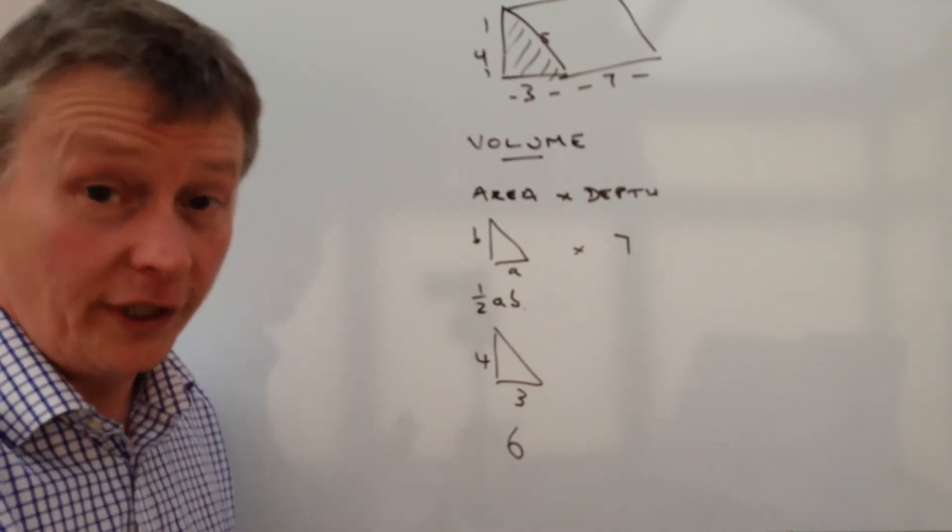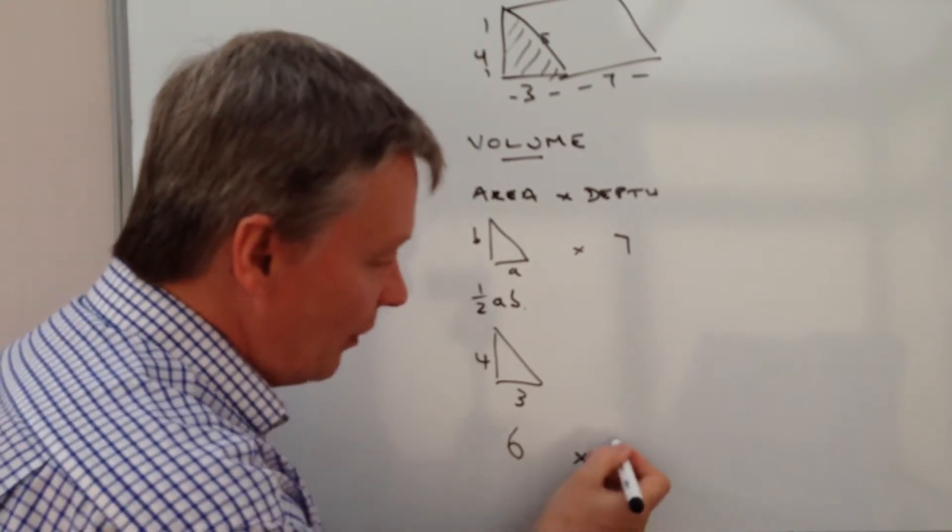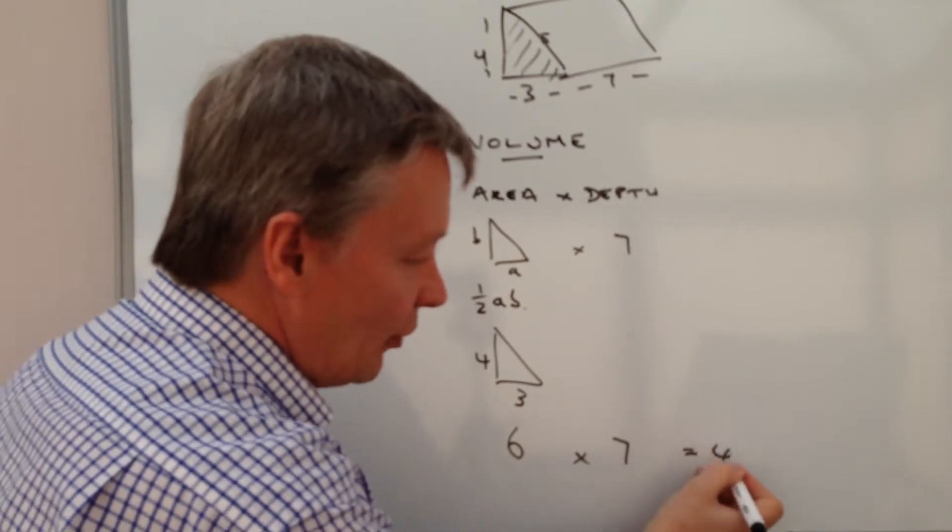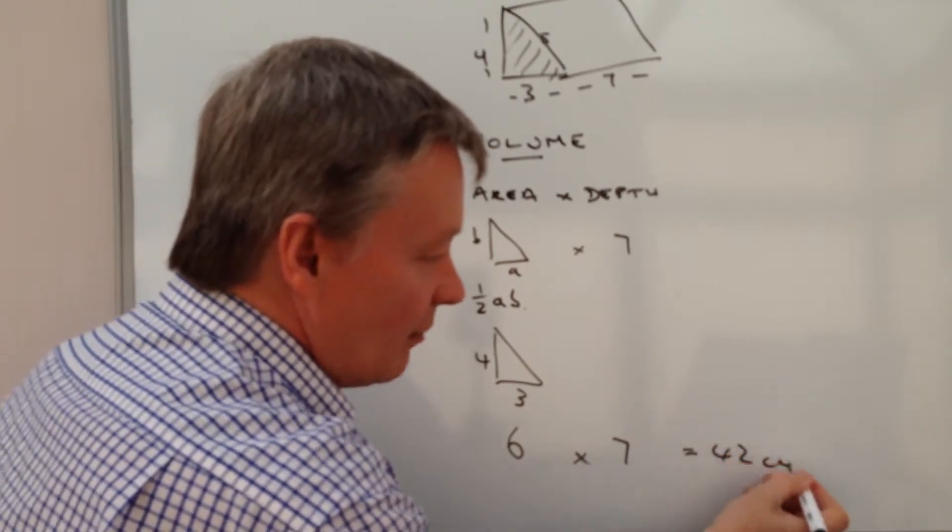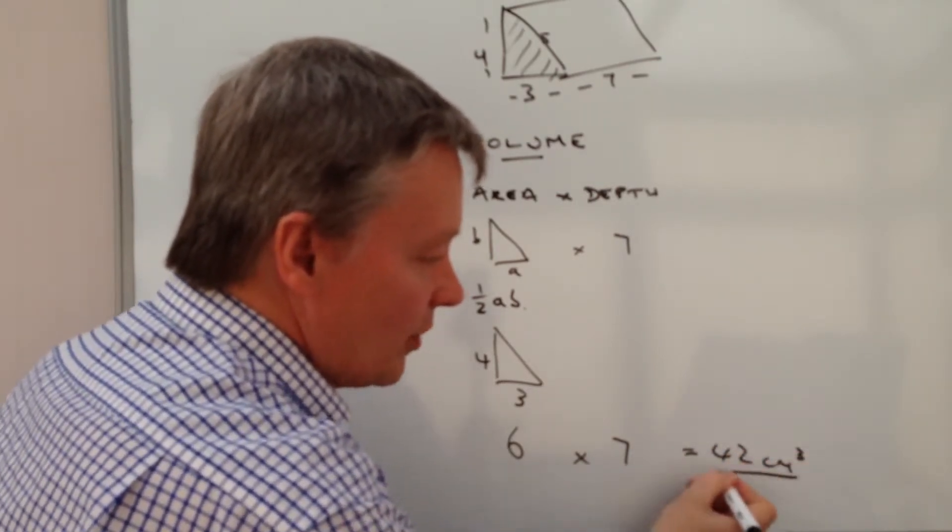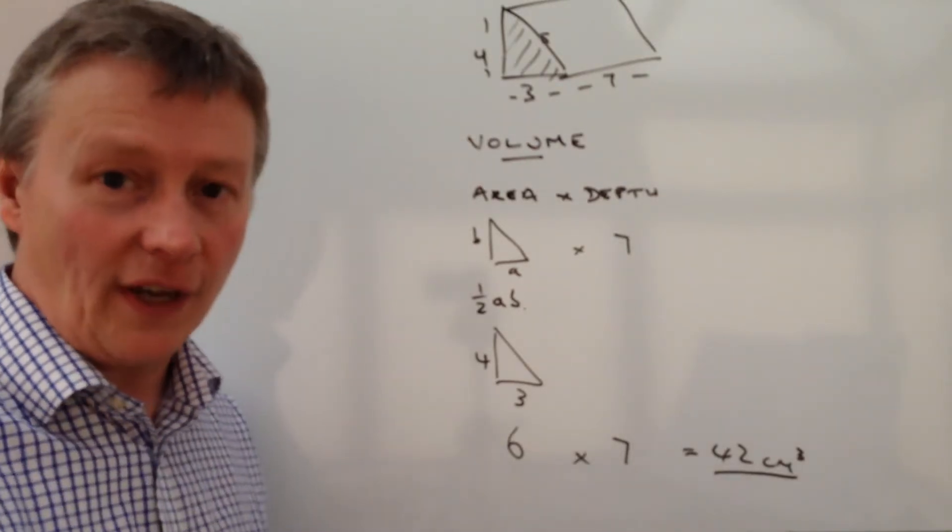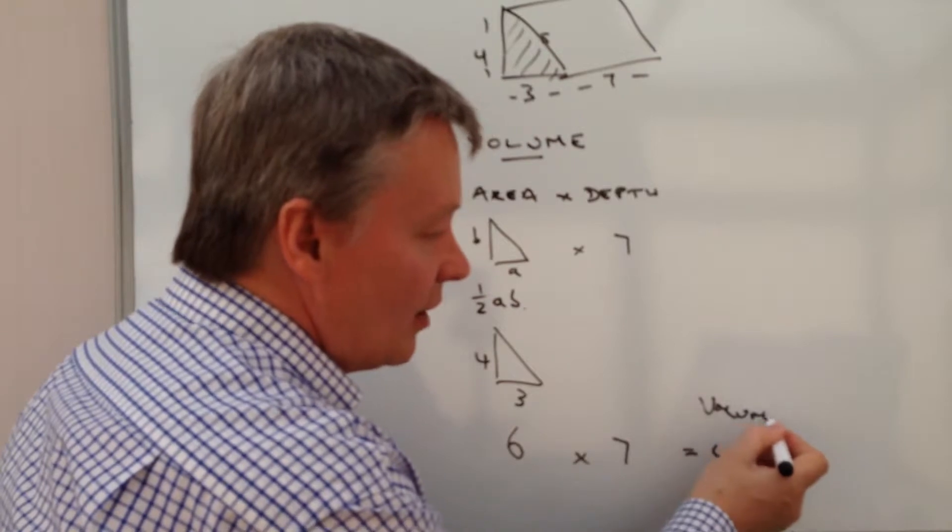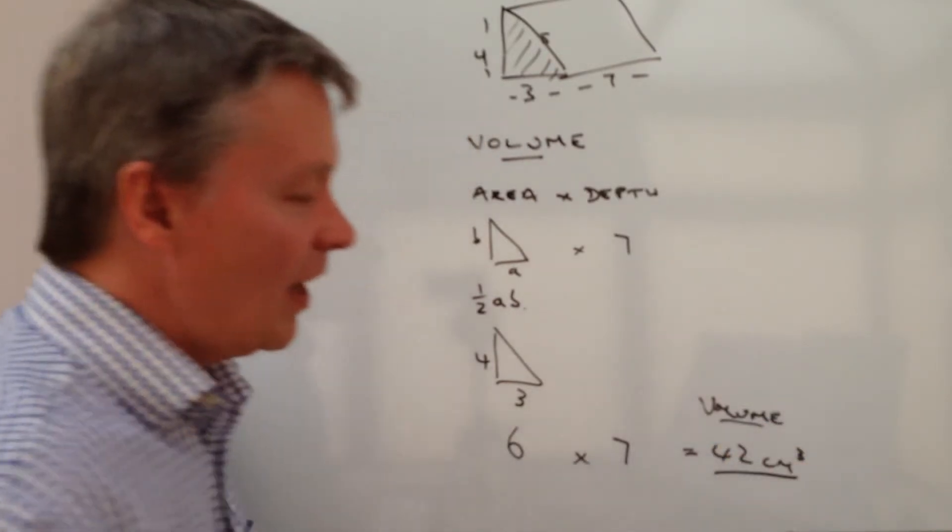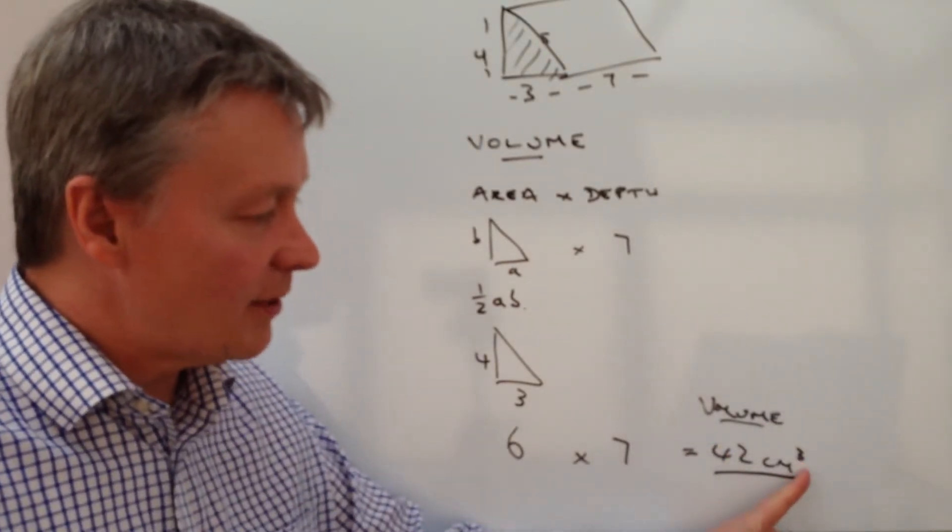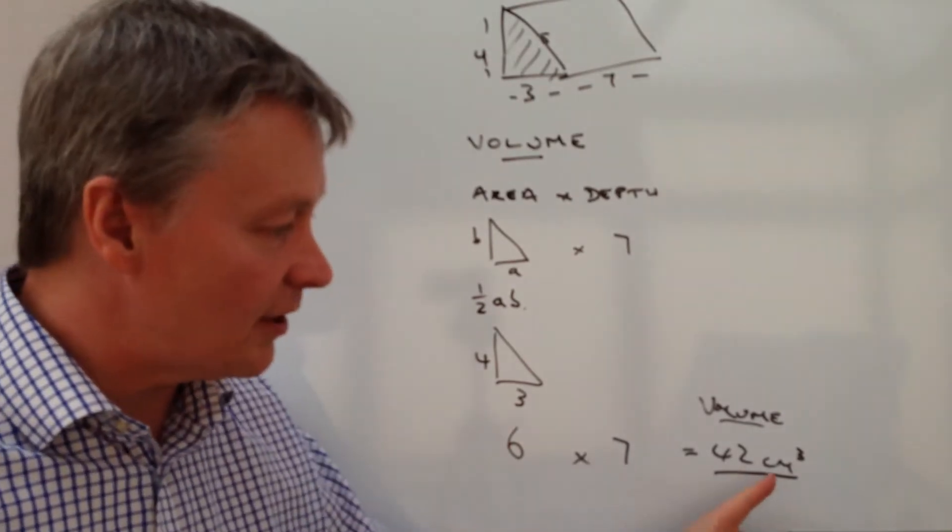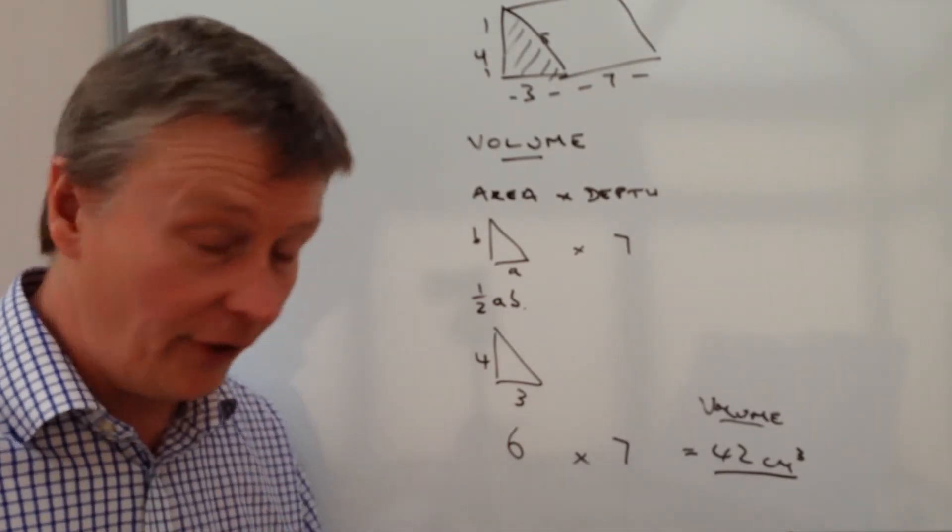Now to get the volume I'm going to multiply that by 7 which is the depth. So 6 times 7 is 42 cm cubed. And that's the value of the volume of this particular triangular prism. Now just be very careful that you've got cm cubed for volume and in the previous video we had cm squared for area.